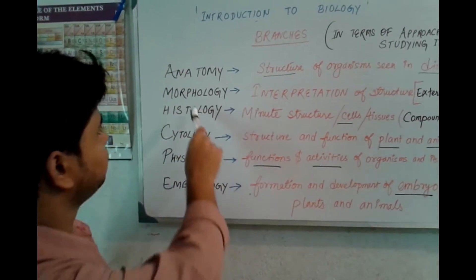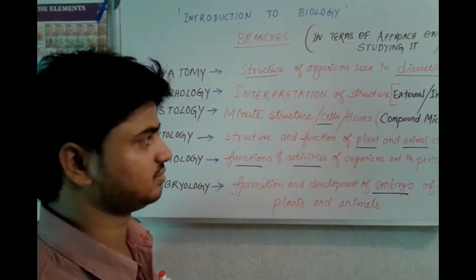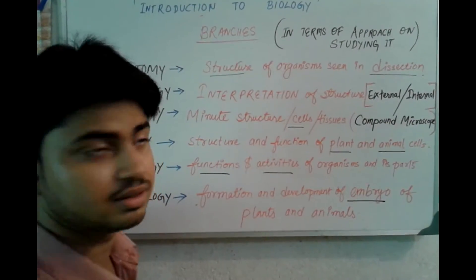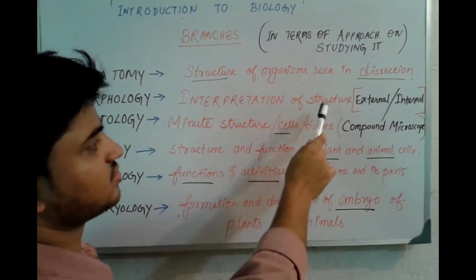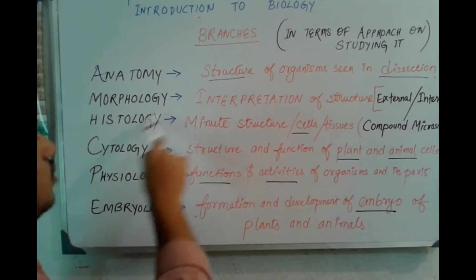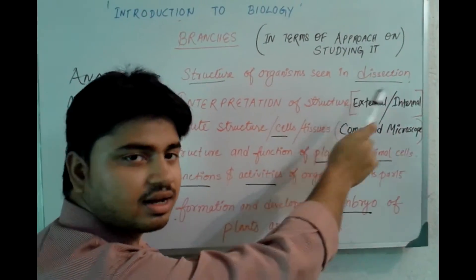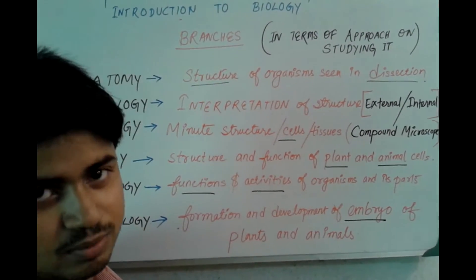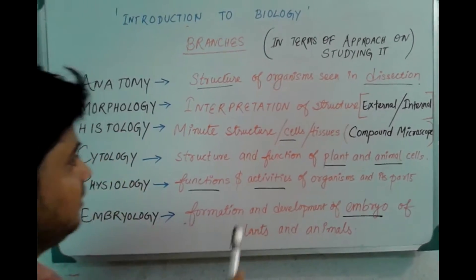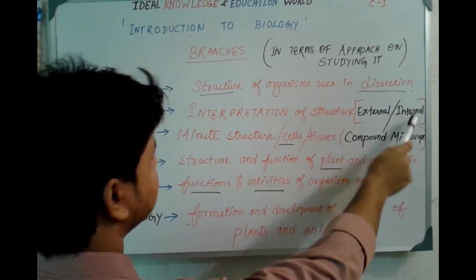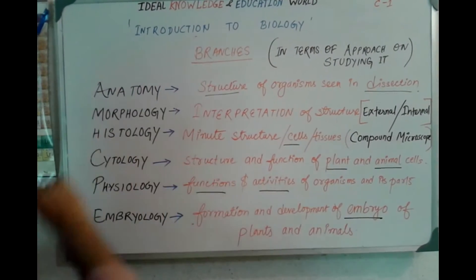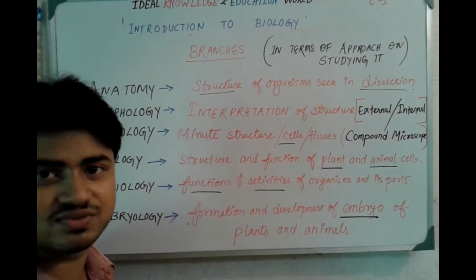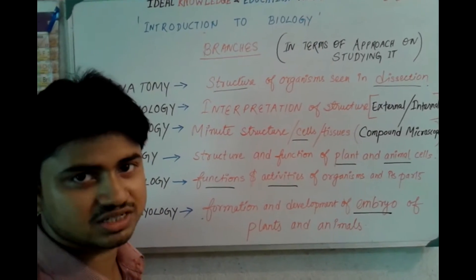Next is morphology — the interpretation of structure. After dissection, we interpret the structure, and this morphology covers both external and internal aspects. The total external and internal study of the structure of an organism is called morphology.